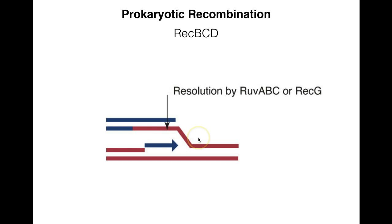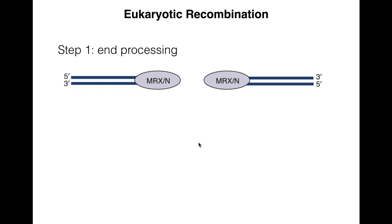If RUV-A, B, and C aren't doing their job, REC-G can facilitate branch migration, but it doesn't have exonuclease activity. It's unable to do the cutting and has to rely on pre-existing single-strand breaks in the DNA for the actual cutting. That's the basics of prokaryotic recombination and a few of the proteins involved.